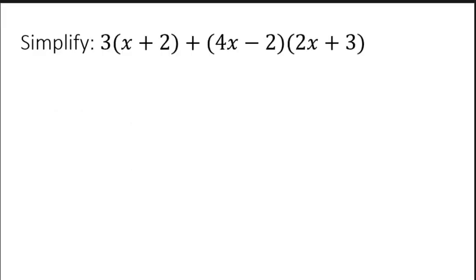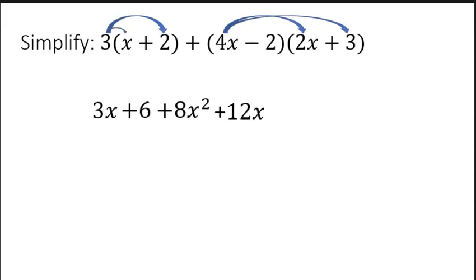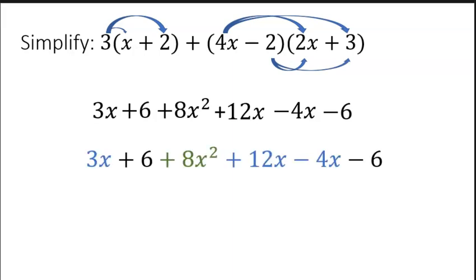For example, when simplifying this expression, there is nothing to simplify inside of the parentheses, and there are no exponents. That means that we'll start with multiplication and the distributive property. And then we will identify and combine like terms. Like terms have the same variables with the same exponents. When you combine like terms, you're adding and subtracting them.